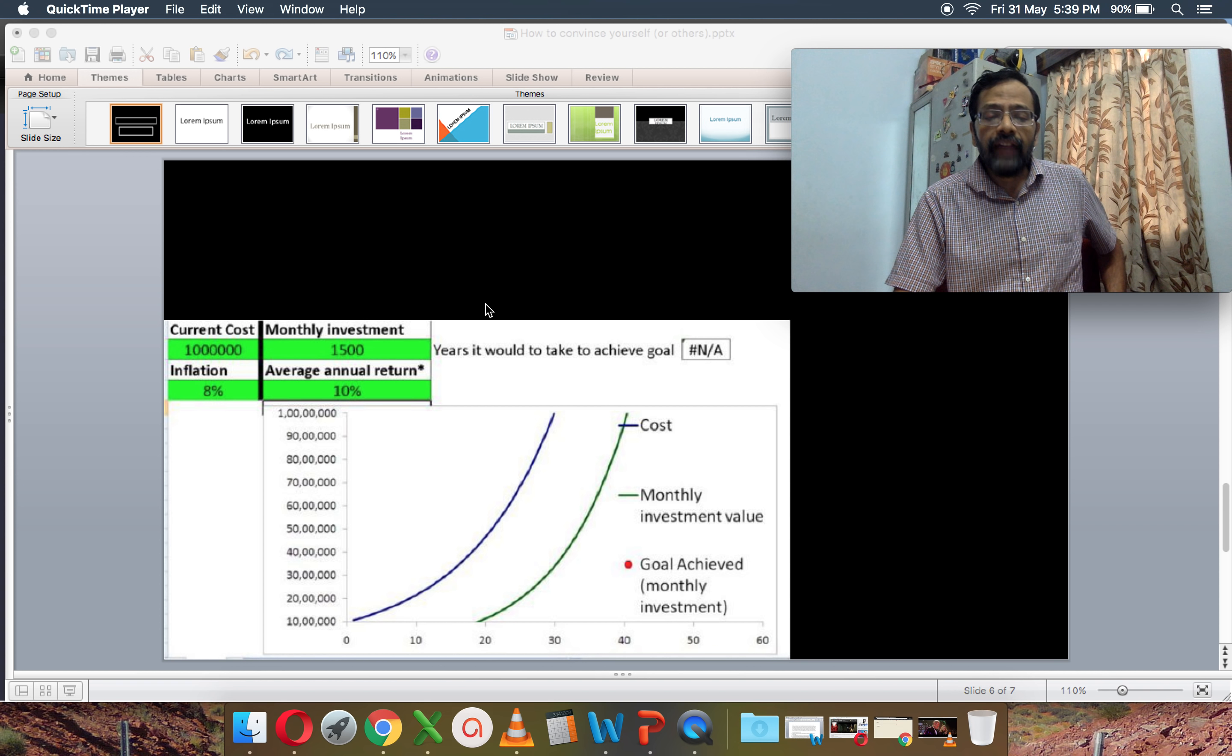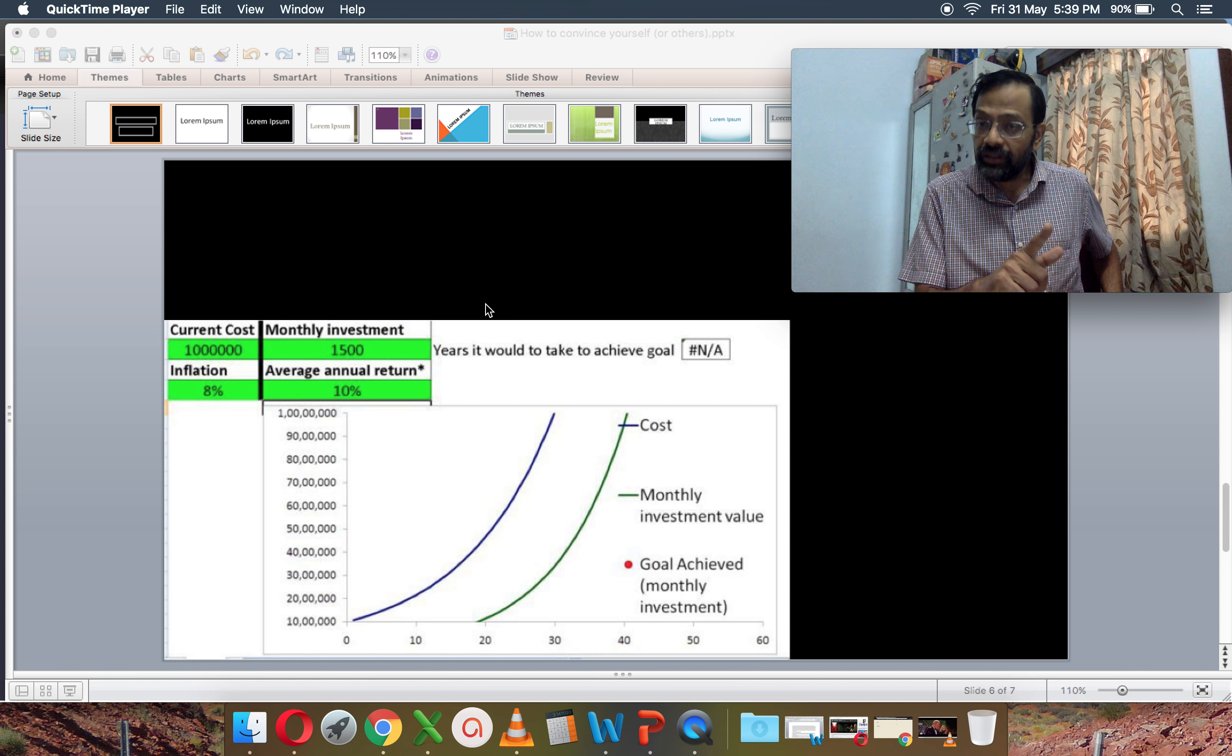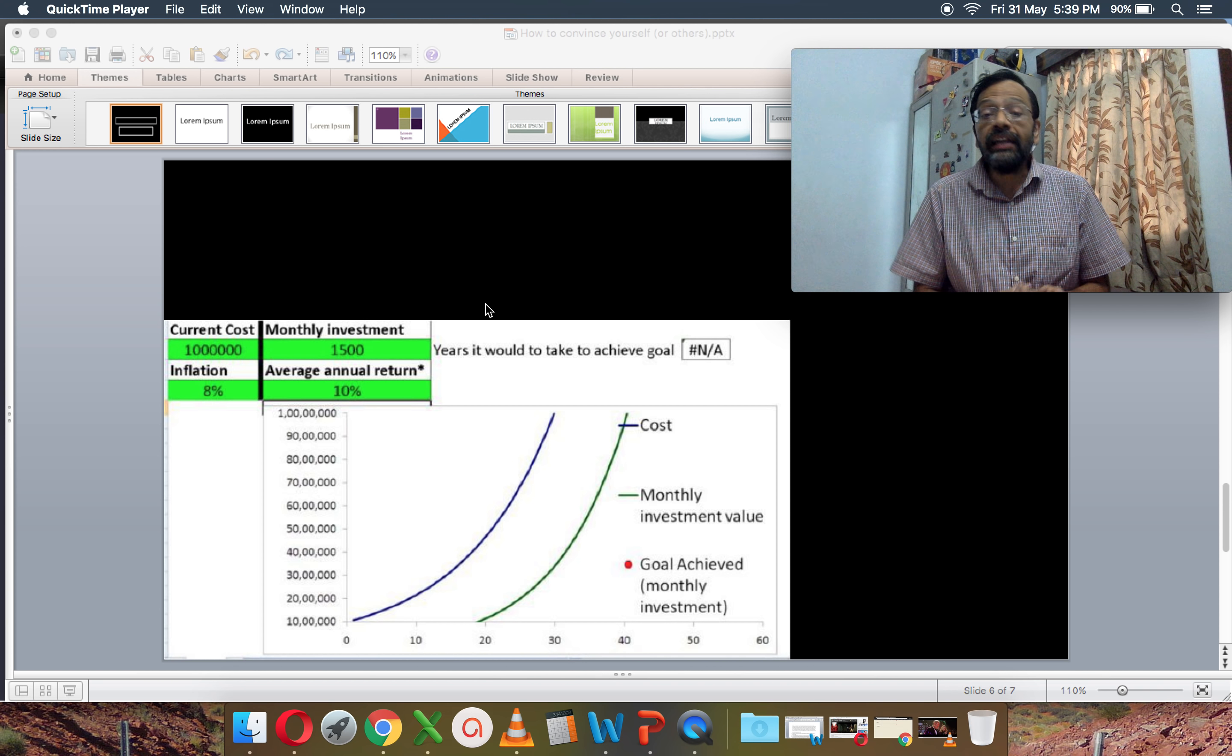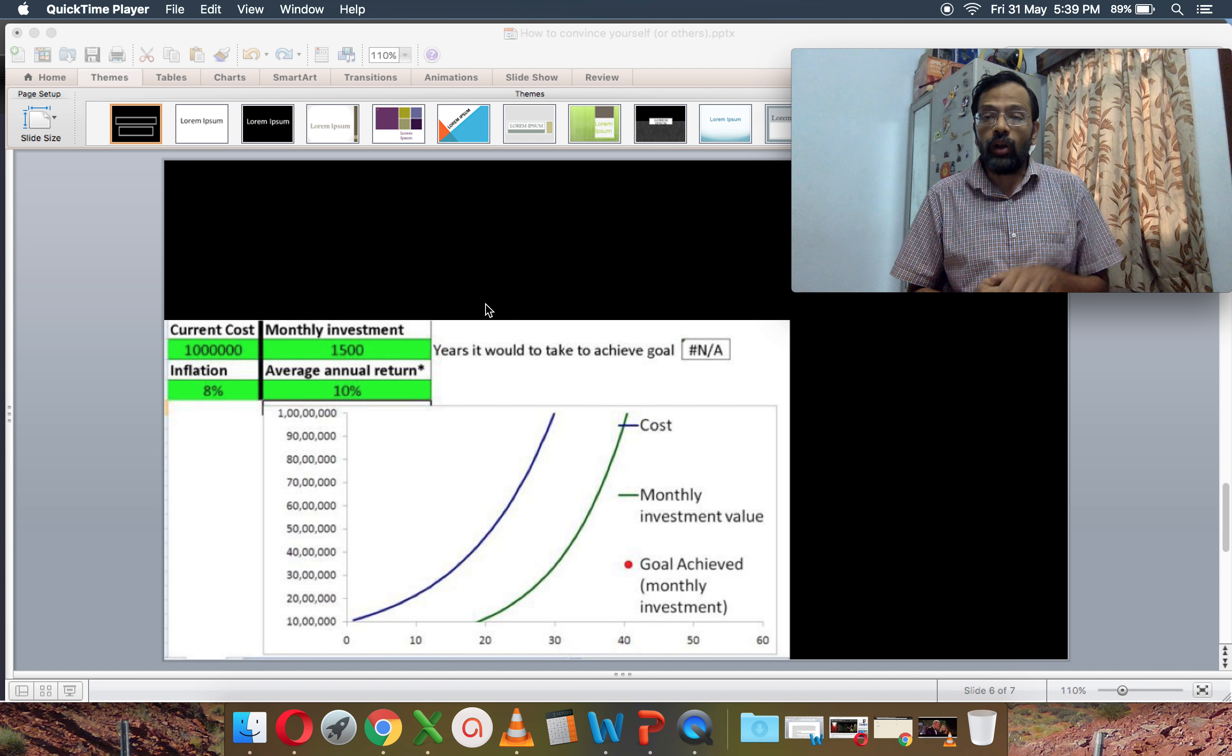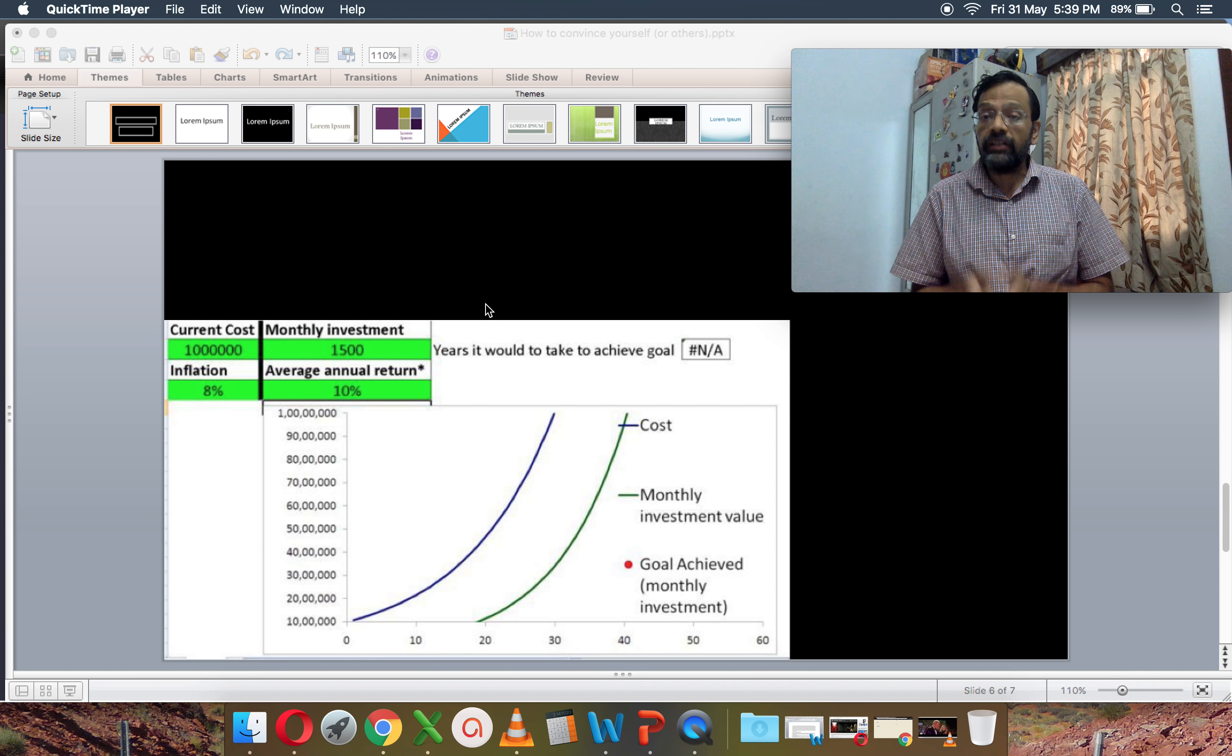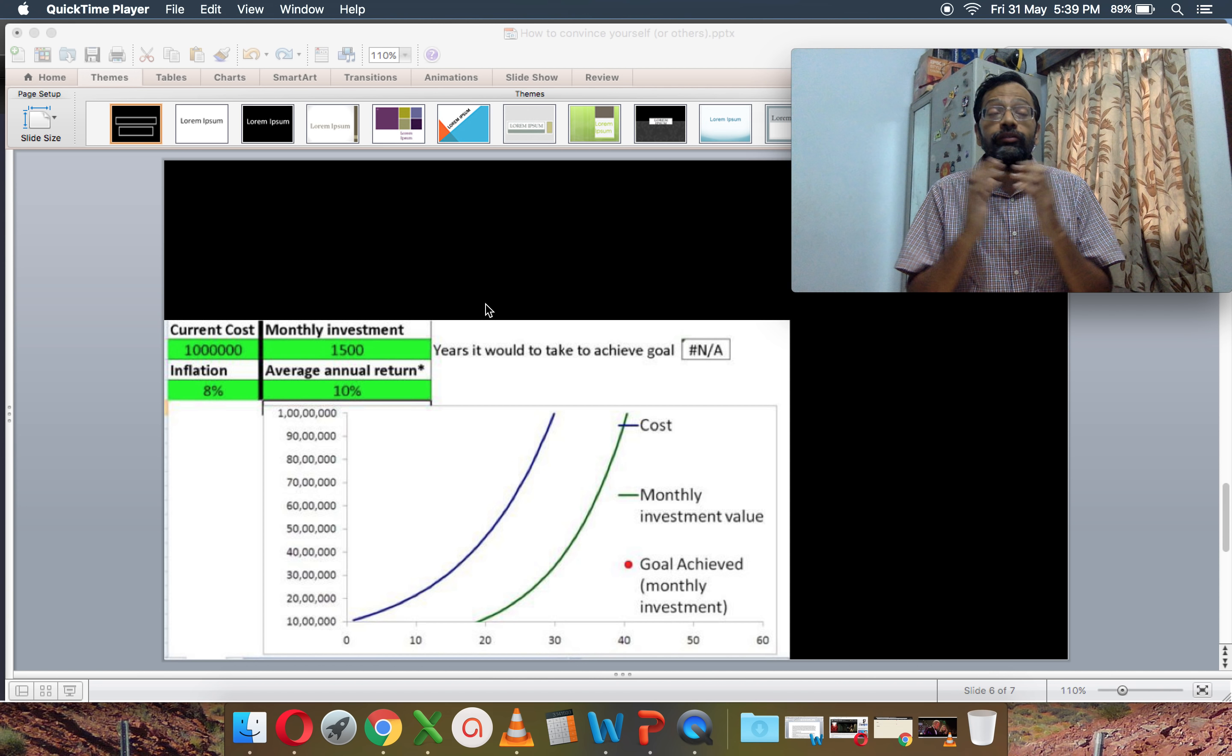One more example, 10 lakhs, 8% inflation, the average annual return is 10%. The monthly investment is only 1,500. Again, recognize there's a 2% real return, but since the monthly investment is extremely low, again, the green line does not cross the blue line. Therefore, again, operation successful, obtained real returns, but patient died. The goal cannot be achieved.